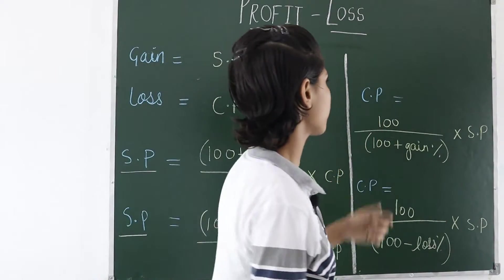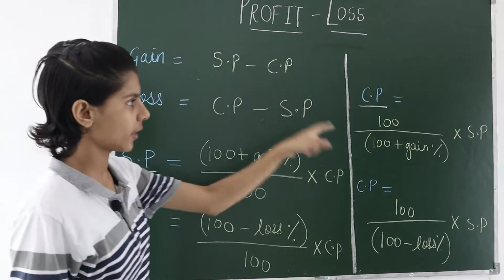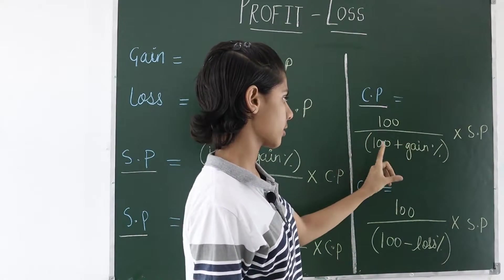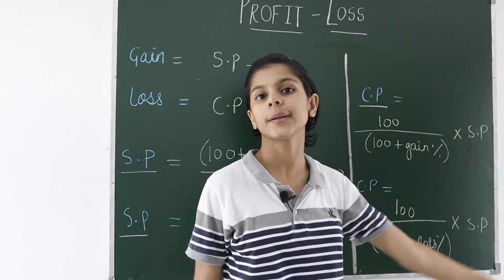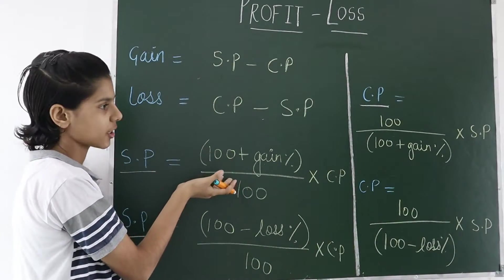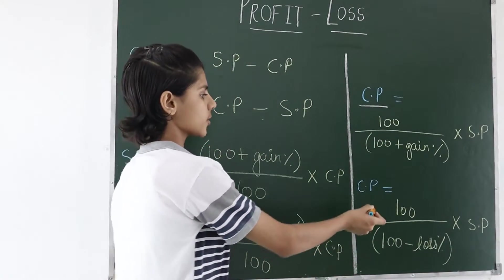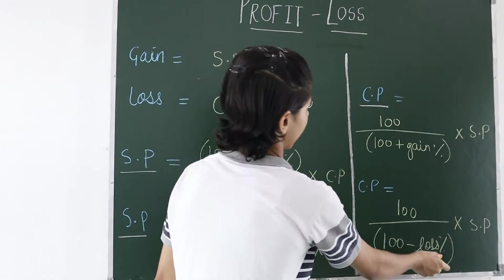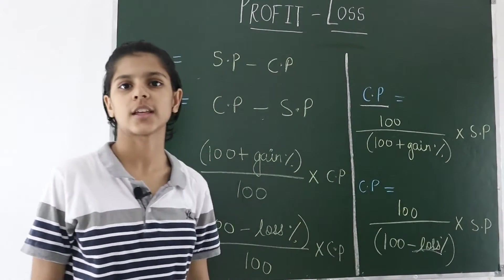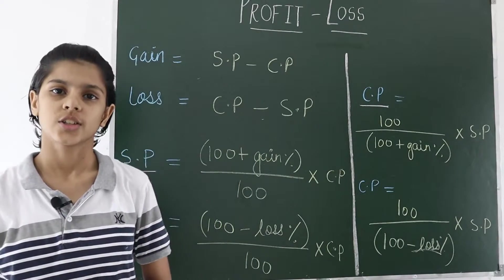When we have to calculate the cost price and we are given the gain percent, the formula is: CP = 100 ÷ (100 + gain%) × selling price. Here, 100 plus gain percent moves to the denominator side — it is just the reciprocal. When we have to find the cost price with a loss percent, the formula is the same but with minus loss percent. These are the basic formulas used in this chapter.